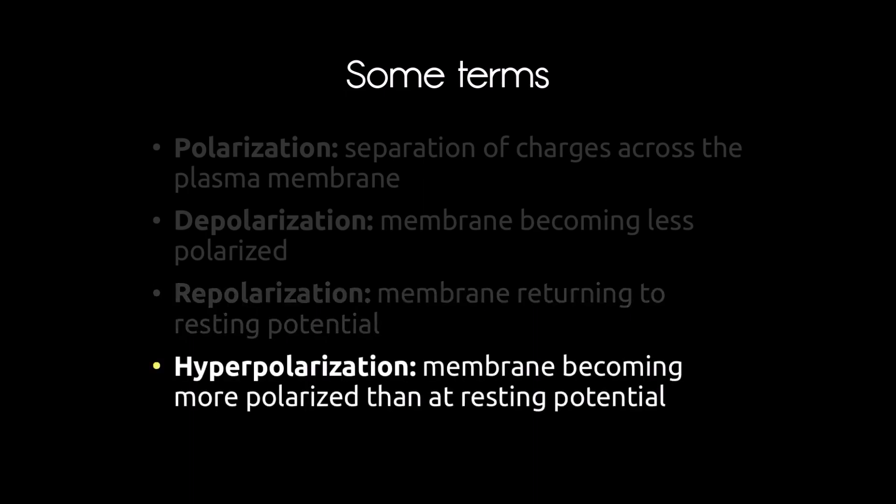Hyperpolarization is the membrane becoming more polarized than at its resting potential. During resting potential, neurons have a polarization of negative 70 millivolts. If the potential goes beyond that to negative 80 or negative 90 millivolts, that would be hyperpolarization.